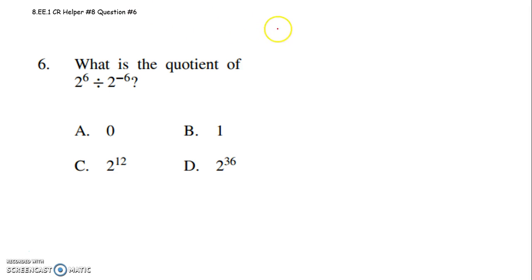Okay, so we know if they have the same base—that base in this case happens to be a 2—when dividing, keep the base, so we'll keep our 2, and subtract exponents.